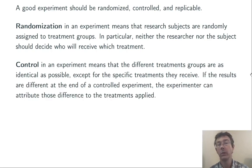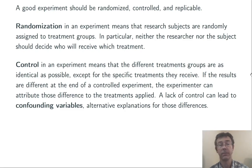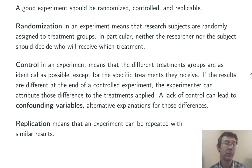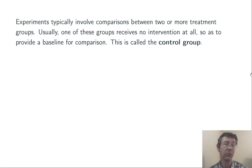Control is what's going to allow us to establish cause and effect at the very end. If you don't have control, you're inviting confounding variables — alternative explanations for the differences that you observe. Replication means that an experiment can be easily repeated with similar results. An experiment that can't be replicated generally has very low value.